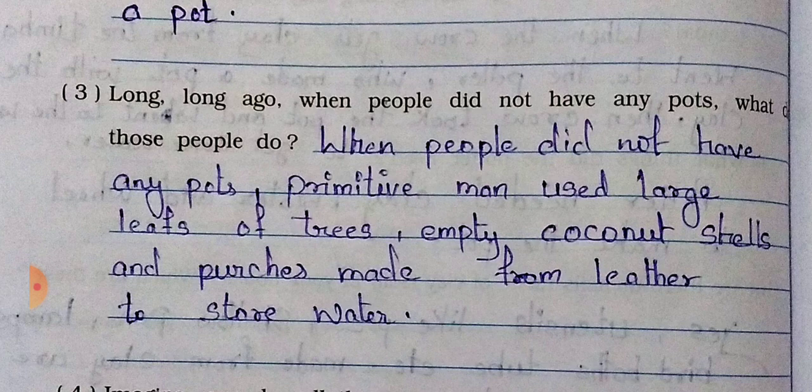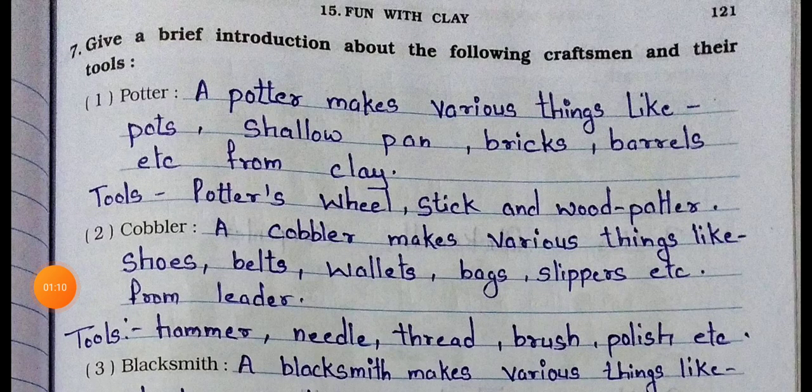Now turn to the next page in your workbook. See question number seven: Give a brief introduction about the following craftsmen and their tools. First, the craftsman is the potter. A potter makes various things like pots, tiles, bricks, etc., from clay. Tools a potter uses: potter's wheel, stick, and wood plato.